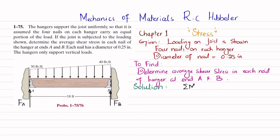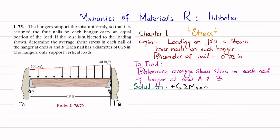The first equation of equilibrium is that the sum of all moments about point A equals zero, taking counterclockwise moment as positive. The load of 30 lb/ft is converted into a uniformly distributed load plus a triangular load. The difference is 40 minus 30, which equals 10 lb/ft for the triangular portion. Converting the uniformly distributed load into a point load gives 30 multiplied by the length of 18 feet, which equals 540 pounds.